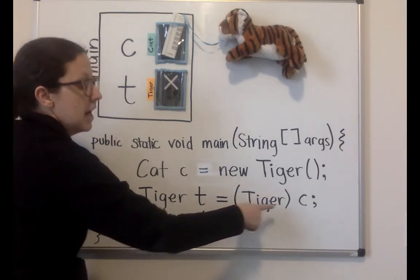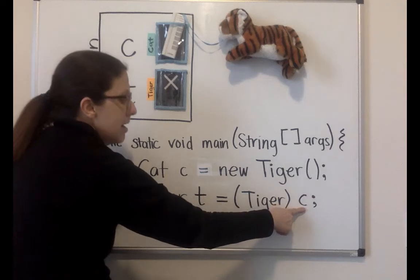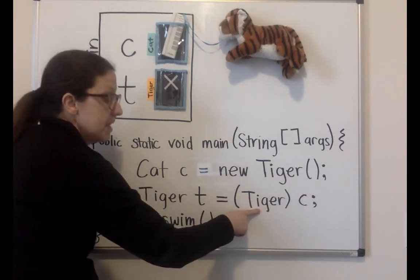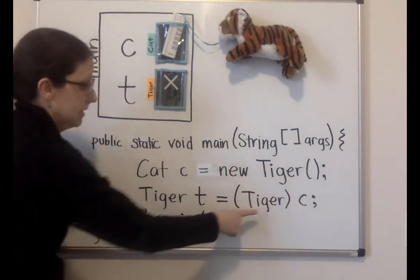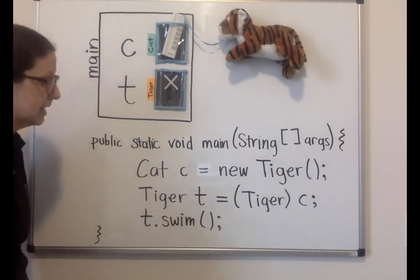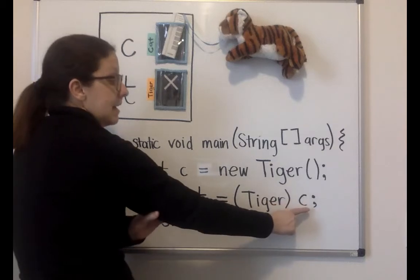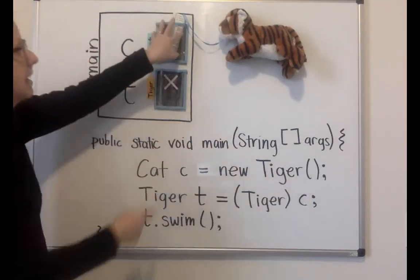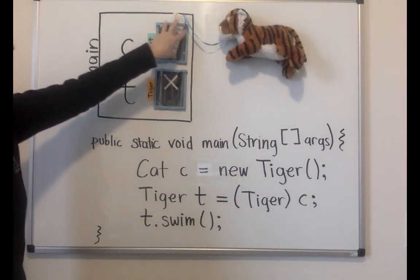You maybe have seen it with ints. I promise that the variable that C is referencing is something of Tiger or a subclass. And this assignment statement, this equals, what it does is it says: